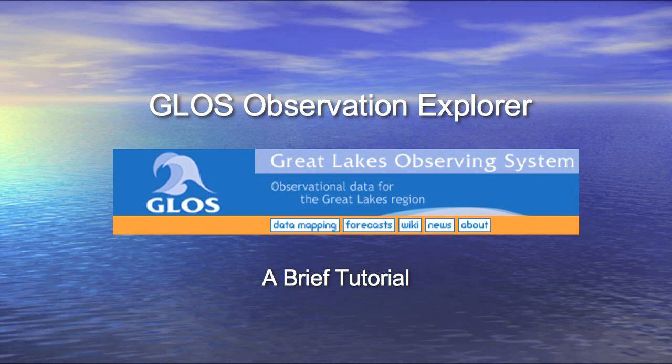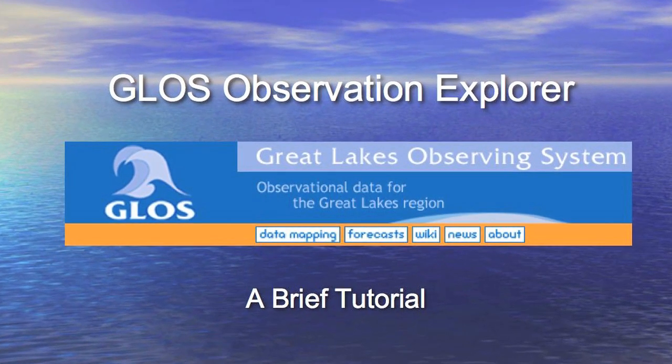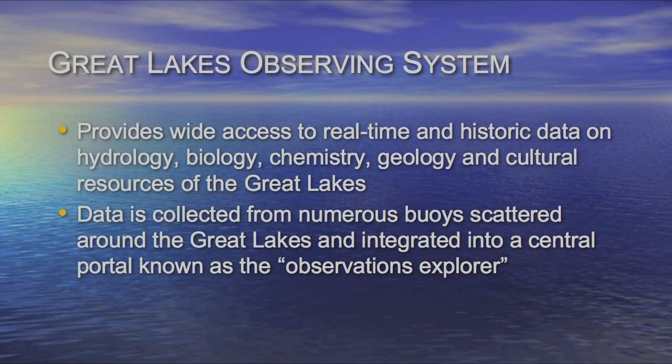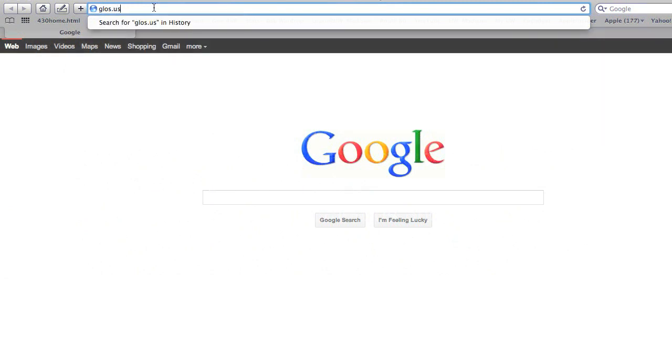Hi, this tutorial will demonstrate some of the basic uses of the GLOSS Observation Explorer. GLOSS stands for Great Lakes Observing System and is a portal for real-time and historical data regarding the Great Lakes. This data is collected and compiled from a number of buoys scattered around the Great Lakes and integrated into a central portal that we will now explore.